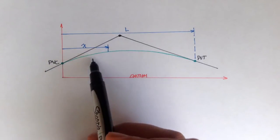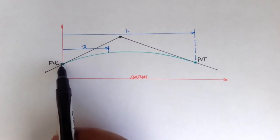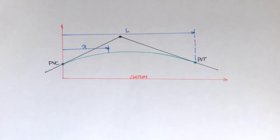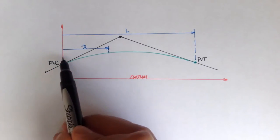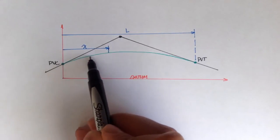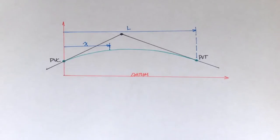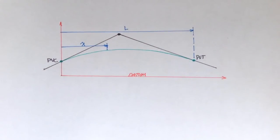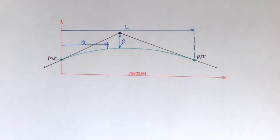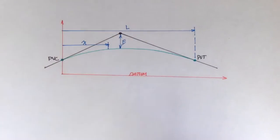Then you have your distances and your length. The length of a vertical curve is simply the length from PVC to PVT, denoted as L. Then you have distance X, which can be any distance from PVC to any point along this vertical curve. You also have your datum and a parameter called E, which is the distance from your vertical curve to your tangent point, or any point on that tangent.